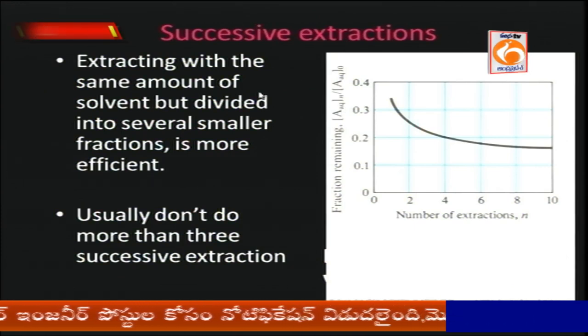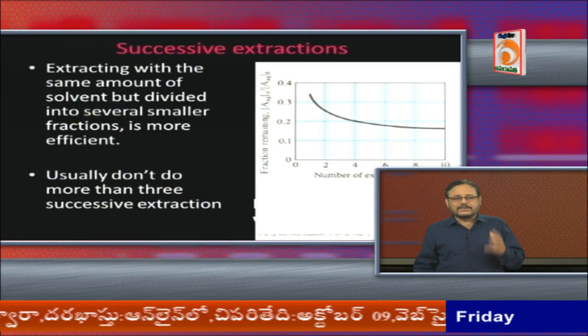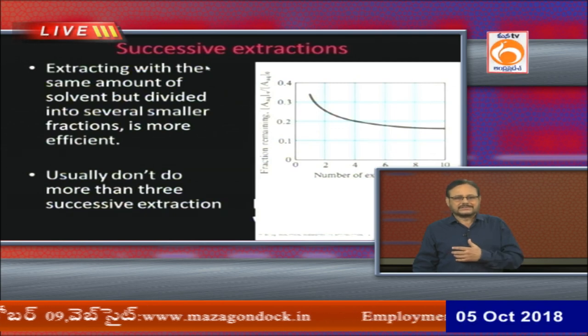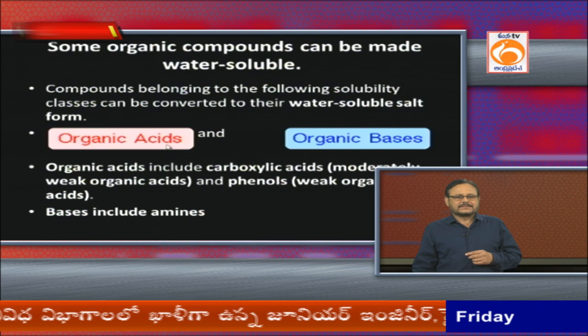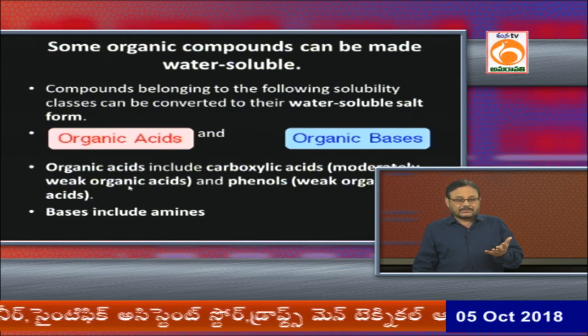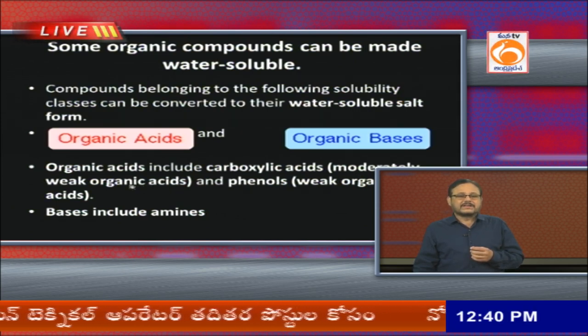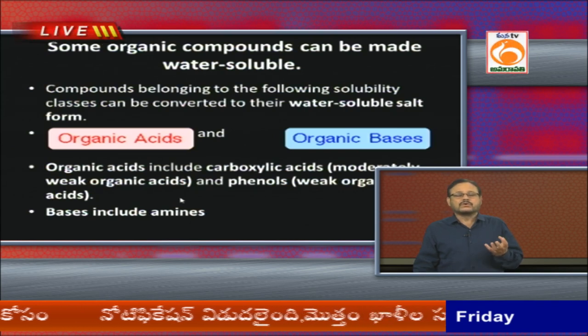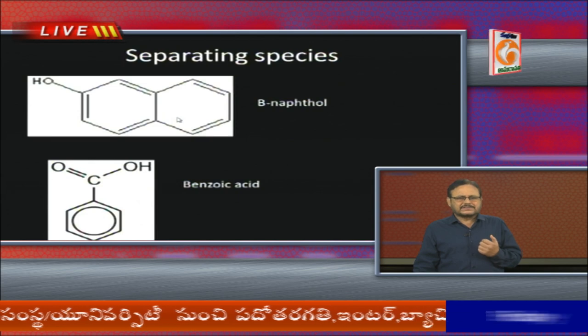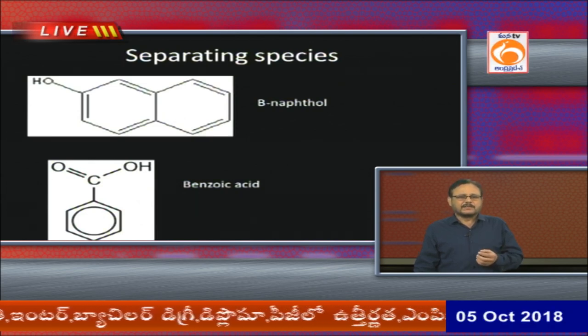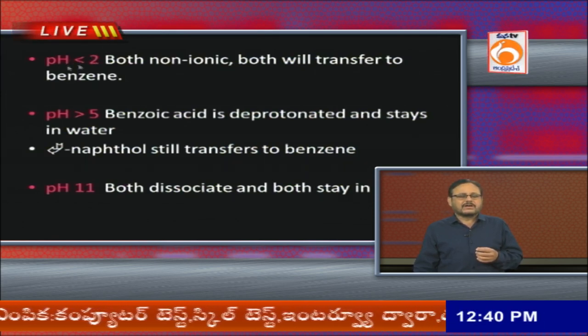The same solvent extraction can be done by successive or batch extractions — by repeatedly adding the solute, more quantity of substance gets extracted. Organic compounds can also be made water-soluble using organic acids and amines that dissolve in water. For example, beta-naphthol and benzoic acid can be separated using pH control: at pH less than 7, both non-ionic species transfer to benzene. At pH 5, benzoic acid is deprotonated and stays in water. At pH 11, both dissociate and stay in water.